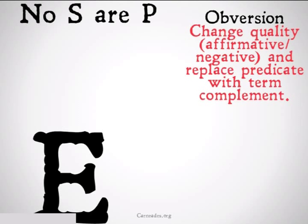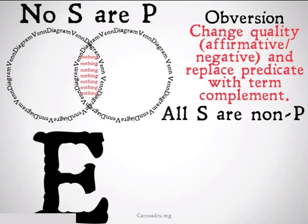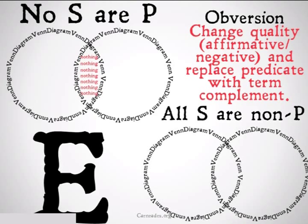This also works for an E statement. 'No S are P' — we fill in our diagram as normal. Then we switch the quality, so we make it an 'all,' and we replace the predicate with the term complement. We get 'All S are non-P.' All things that are S are things that are not P, so we shade in that middle area once again. The Venn diagrams are identical, so it's a valid form of argument.